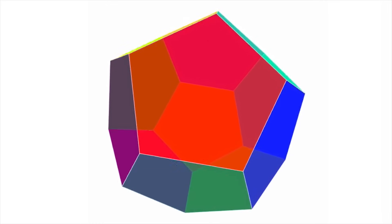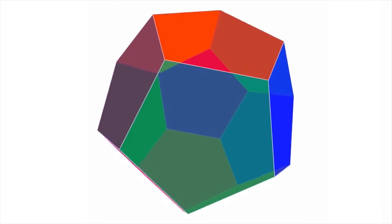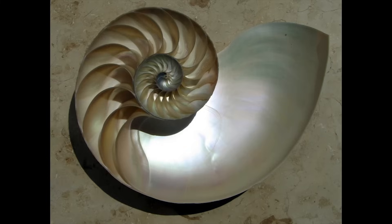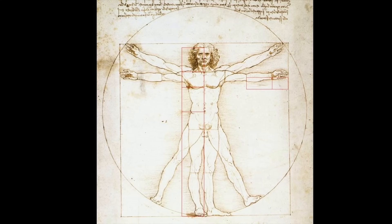I don't want to argue for or against the golden ratio in nature and art, but rather show the many cool ways where the golden ratio appears in mathematics.